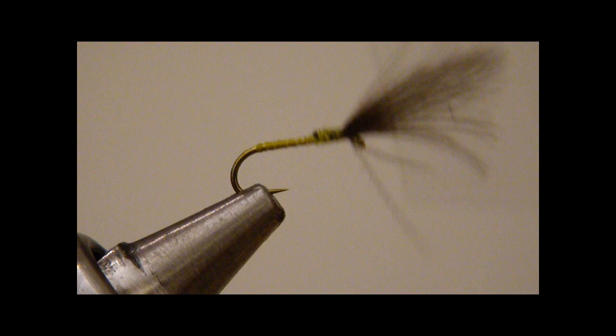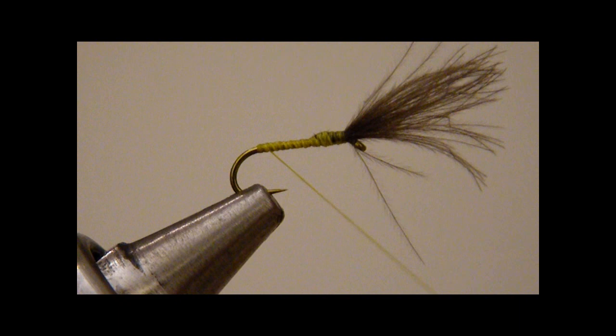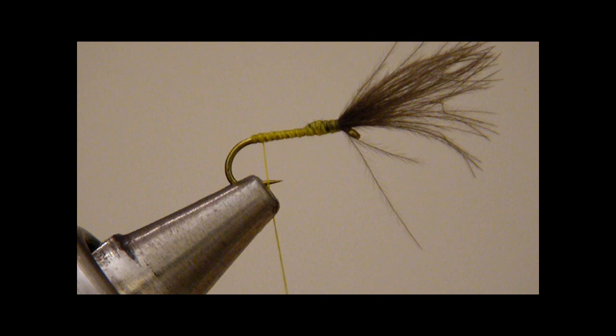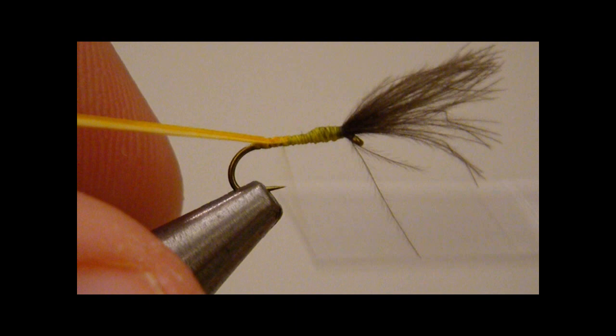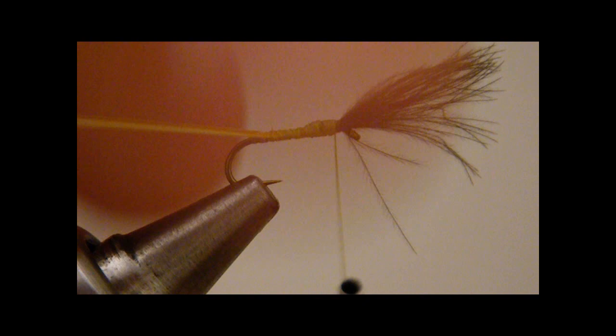After all, this fly is not flying away anytime soon. It's going to get eaten. Run the thread back to the back and tie on your sulfur orange biot. Again, you could use super fine dubbing here if you wanted to. And I kind of like the way that this biot looks. Tie that down there and build up a good thread base and come back up here to behind the wing.